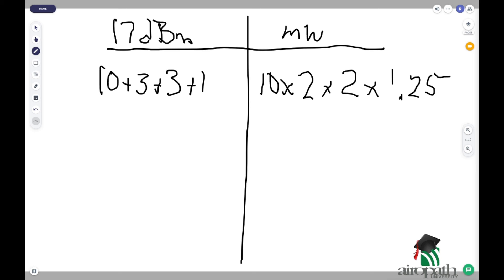So, on the milliwatts side, we have 10 times 2, which is 20, times 2, which is 40, times 1.25, which equals 50 milliwatts. So, 50 milliwatts is equal to 17 dBm.